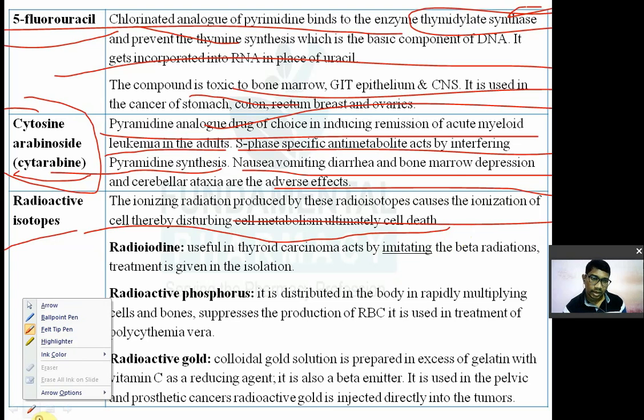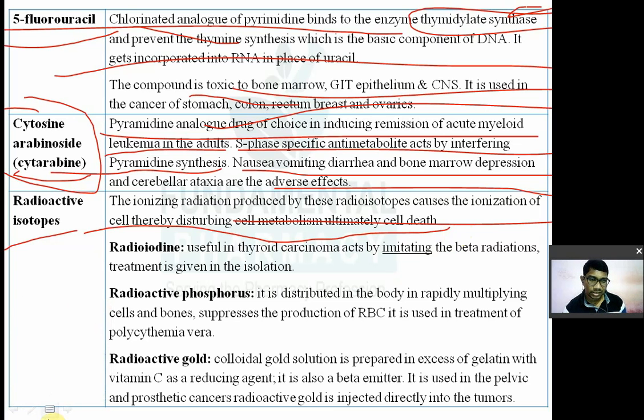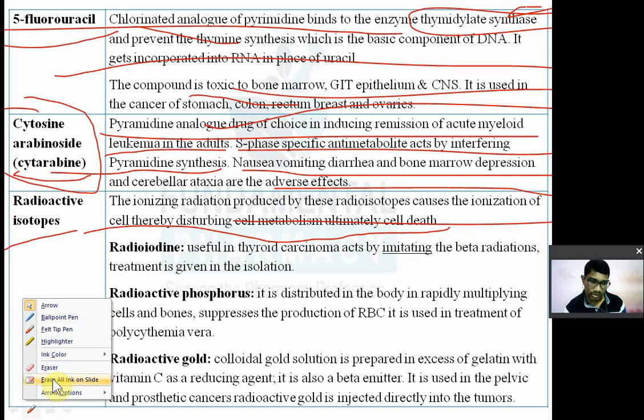The radioactive compounds used in cancer include radioactive iodine, radioactive phosphorus, radioactive gold, and other radioactive compounds.